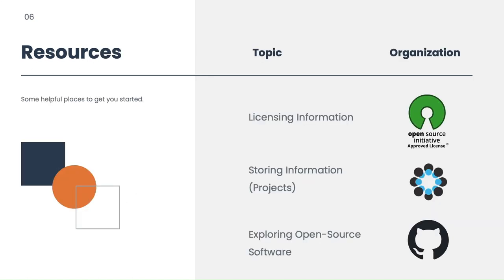Getting started with open source can feel like a lot, but it doesn't have to. These are some resources that may help you get started. For more information on license definitions, you can check out the Open Source Initiative's license list. For getting started on storing your code and research information in one central place, you can look to projects within the OSF from the Center of Open Science. To explore thousands of open source software projects, you can take an adventure through GitHub.